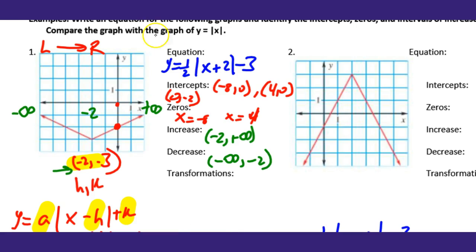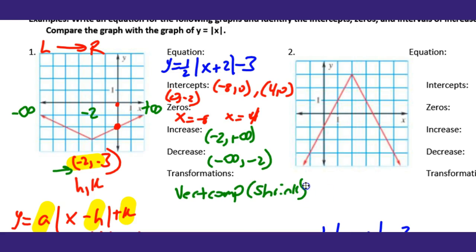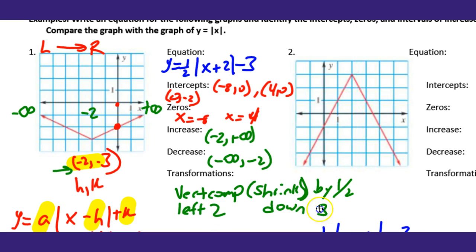Now transformations — same terminology as we used for radicals last unit. Out front we have 1/2: that tells us there's a vertical compression — a vertical compression or shrink by half. Then +2 means we go left 2 units. Then -3 means down 3 units. Left 2 units, down 3 units — that's how you answer this first problem.